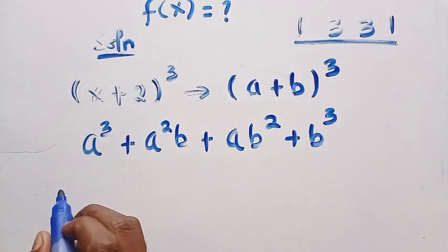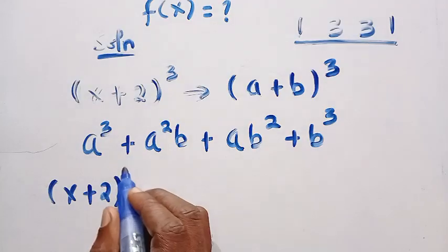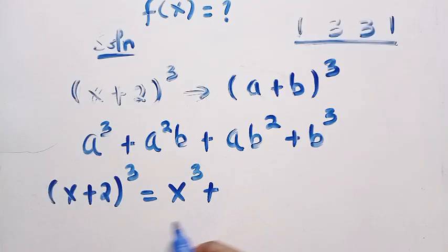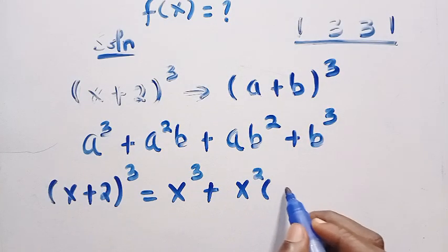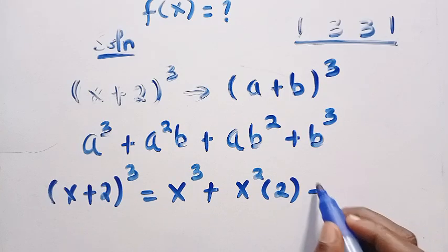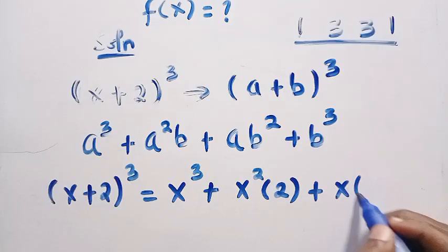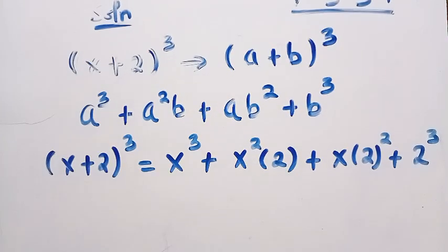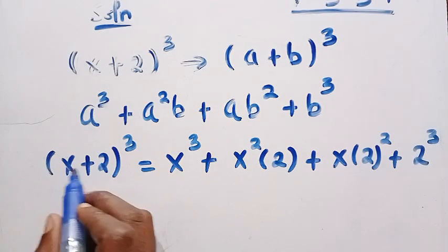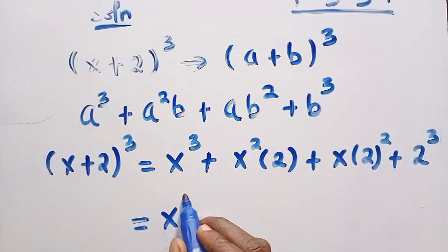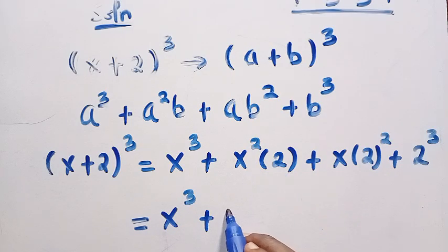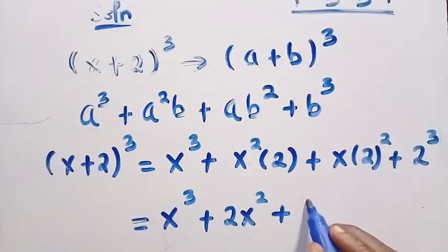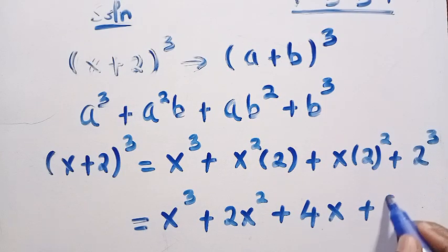For x plus 2 raised to power 3, where x is a and 2 is b, we get x cubed plus x squared times 2 plus x times 2 squared plus 2 cubed. Breaking this down: x cubed plus 2x squared plus 4x plus 8. I have not yet introduced the coefficients — this is just the raw expansion of x plus 2 raised to power 3.